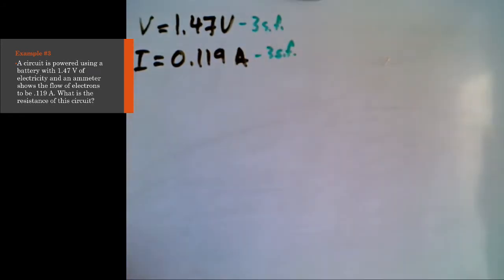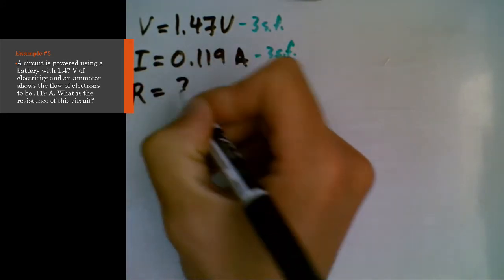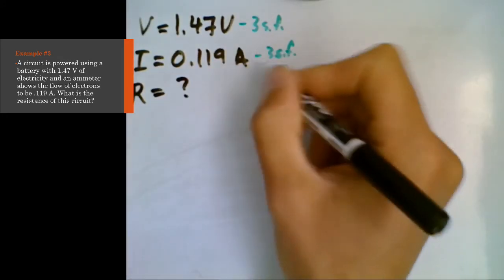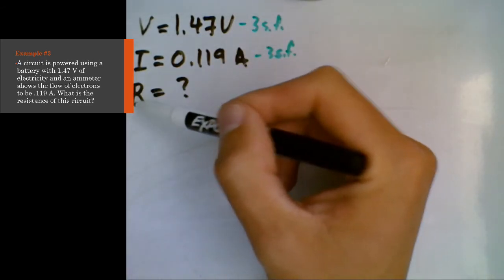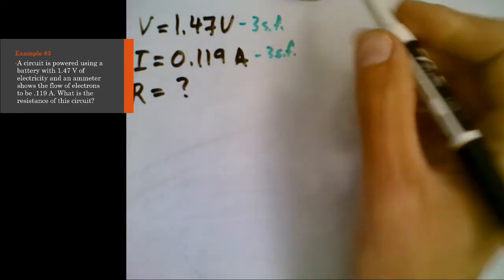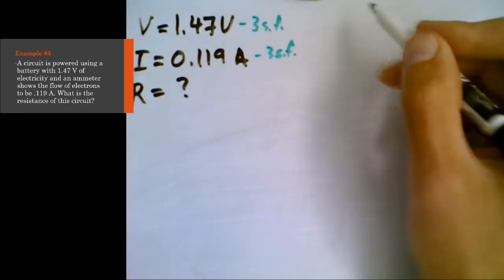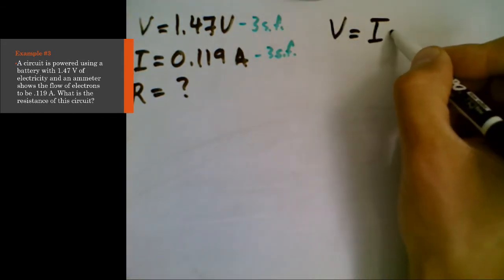So we have 1.47 volts of electricity. We have 0.119 amps of current. And if we're thinking sig figs, three sig figs, three sig figs, we know that we're going to end up using Ohm's law based on the variables we've been given. And so we're going to have three sig figs in our final answer. We are trying to solve the resistance.